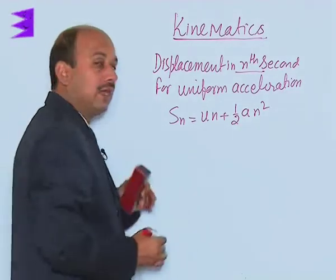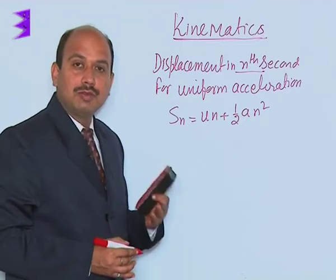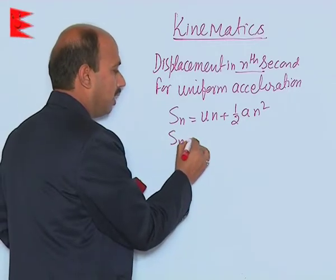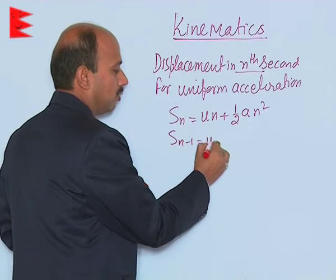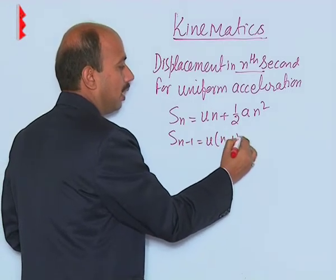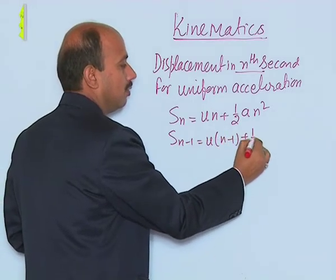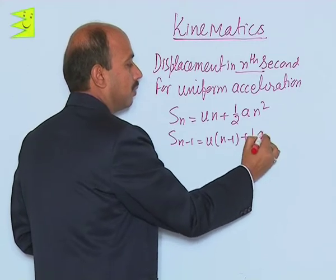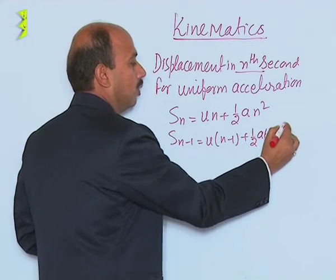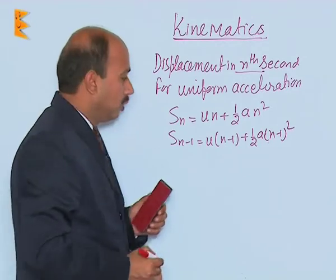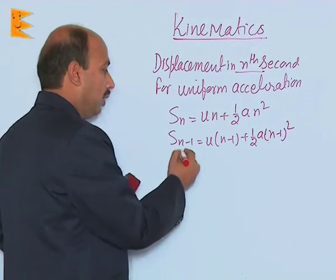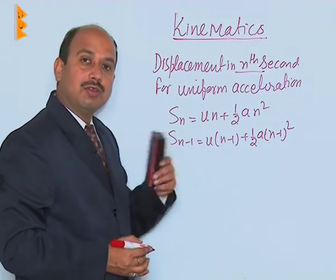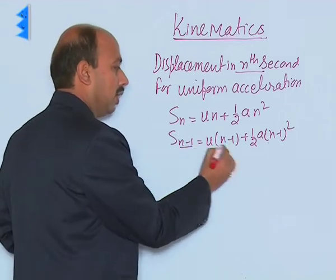Now we can also write displacement in (n−1) seconds. It is Sₙ₋₁ = u(n−1) + ½a(n−1)². Here again we have used the displacement-time relation; in place of time we have taken n−1.